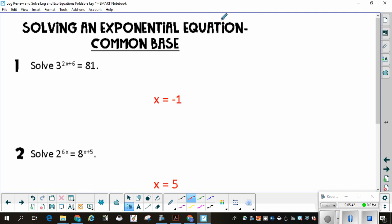This is solving an exponential equation with common base. I have 3 raised to the 2x plus 6. The first thing I want to do is think about 81. Can I rewrite 81 using 3 as a base? I can. So I'm going to have 3 to the 2x plus 6 is equal to 3 to the 4th power. Now that I have like bases, I can set the exponents equal. 2x plus 6 is equal to 4.